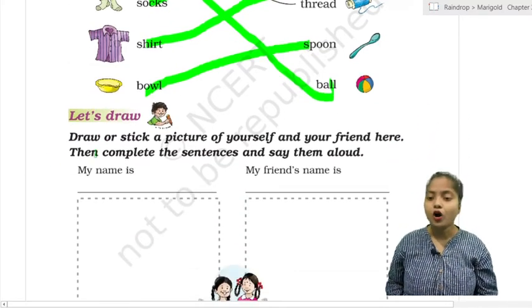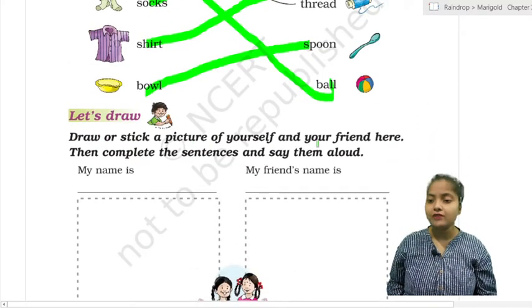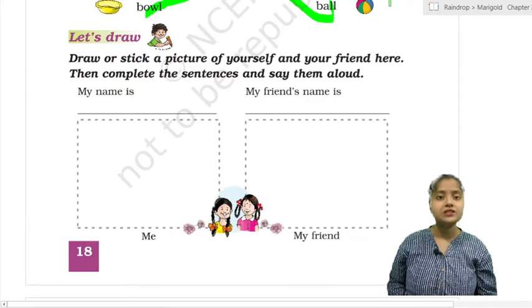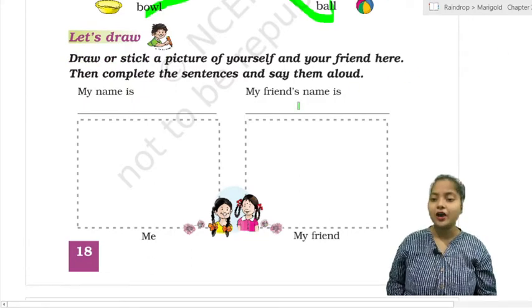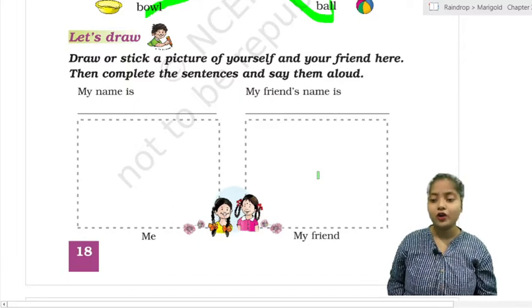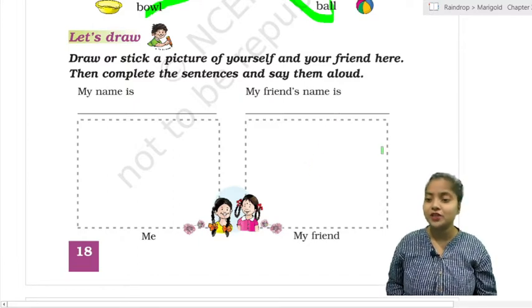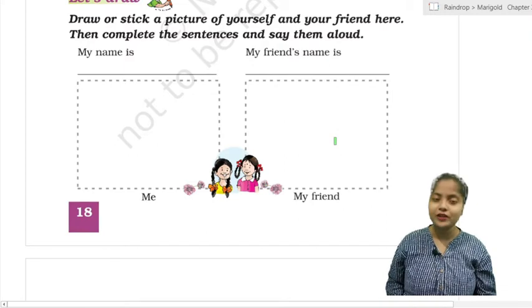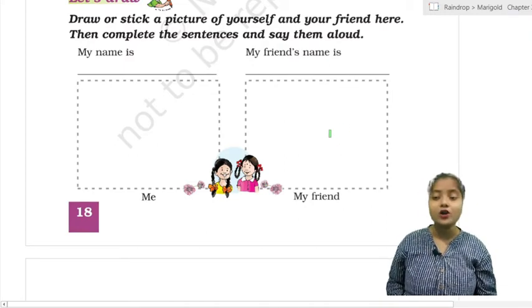Now draw or stick a picture of yourself and your friend here and complete the sentence and say them aloud. My name is, so write your name like my name is Abhilasha. And here you have to write my friend's name is Jayapriya, or whatever friend you have, you write his or her name.